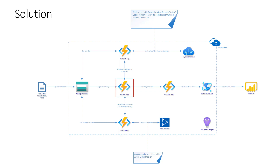Once we reach this central function with the blob trigger, based on the document type, we can call the next function. If this is a PDF file, we will call the next Azure Function, which is responsible for calling Azure Cognitive Services — specifically Azure Computer Vision API and Text Analytics API. Once the PDF file is uploaded, we first scan it using OCR and Computer Vision API, and then we extract insights from its content using Text Analytics API.